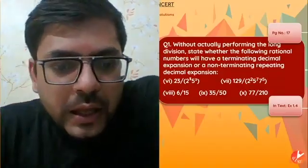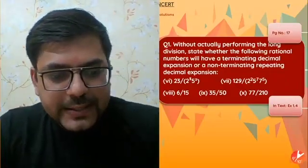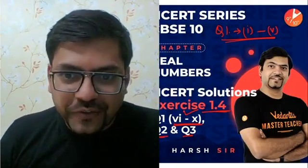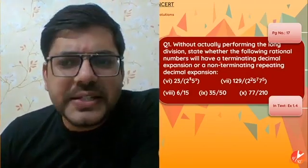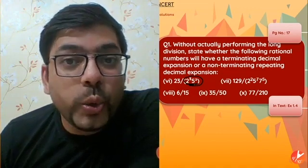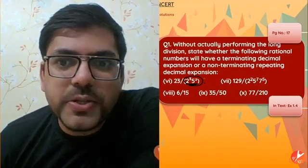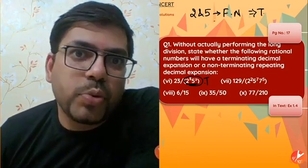The question says: without actually performing long division, state whether the following rational numbers will have a terminating or a non-terminating repeating decimal expansion. The answer is pretty simple — you only have to check the denominator. 2 and 5 are 'friend numbers.' If the denominator has only 2s and 5s, it is terminating. Any other prime factor is a non-friend number and gives non-terminating.